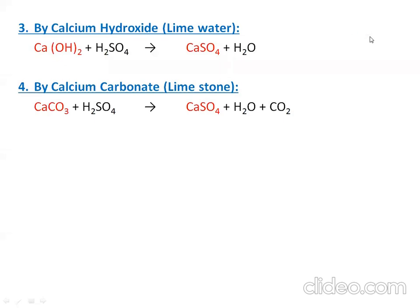An important question: why is sulfuric acid used in both processes? If you use HCl, you won't get the sulfate ion. If you use HNO3, you also won't get the sulfate ion. Sulfuric acid is used because it is the source of the sulfate ion, and it is a strong acid.